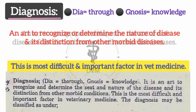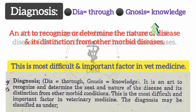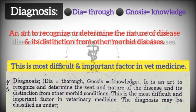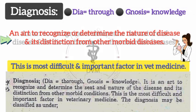What is diagnosis? 'Dia' means through and 'gnosis' means knowledge — so diagnosis means recognition of disease through knowledge. Diagnosis is an art to recognize or determine the nature of disease and its distinction from other morbid diseases. This is a more difficult and important factor in veterinary medicine.